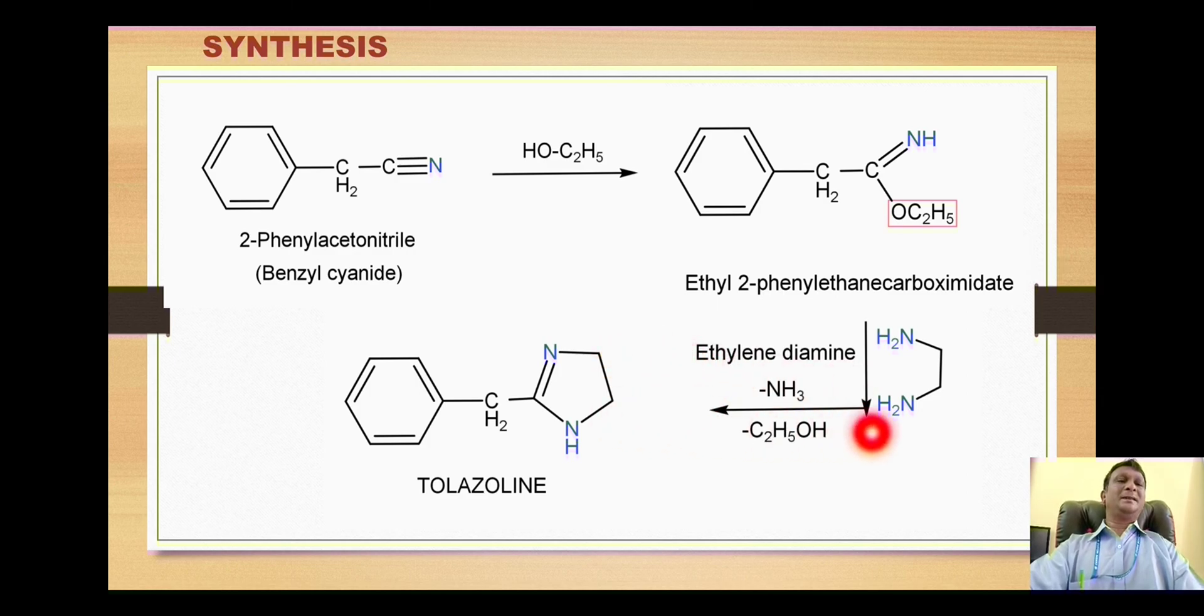This amino group then attacks this carbon, whereby there is release of this ethanol. One of this hydrogen and this ethoxy group will be released as ethanol. With this we have the cyclization here, and with this we have formation of our title compound tolazoline. That is all about tolazoline. Thanks for watching the video, please like, share, and subscribe.